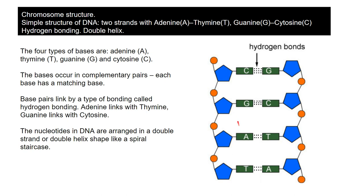There are four types of bases: adenine, thymine, guanine, and cytosine - the A, T, G, and C. This forms a double strand almost like a ladder, and bases form complementary pairs. C always combines with G, and A always combines with T. Adenine always combines with thymine, and guanine always combines with cytosine - so they're complementary or matching to each other.